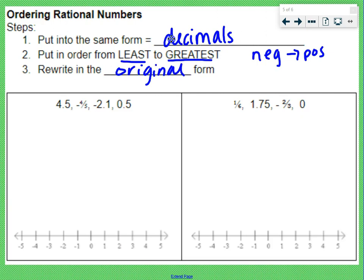So if we take a look at the first one: 4.5 is in the right form, that's a decimal. Negative 2.1 is in the right form, and 0.5 is in the right form. We just need to convert negative four-fifths. That means we're doing negative 4 divided by 5. That fraction bar means divided by. If we do that, we get negative 0.8. So right here, I'm going to write negative 0.8.